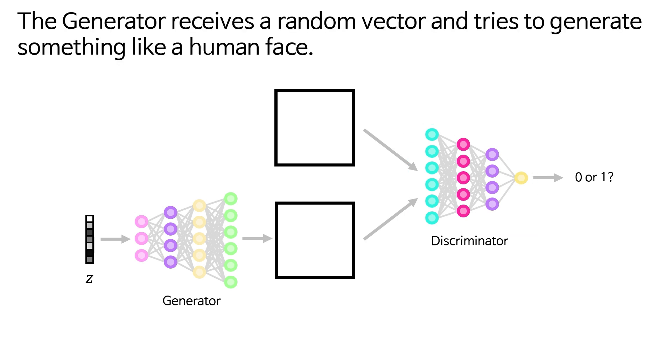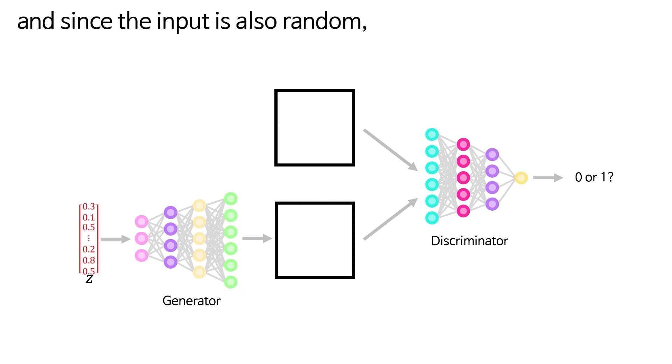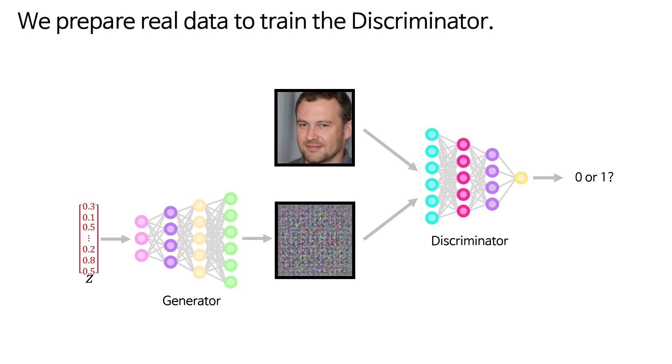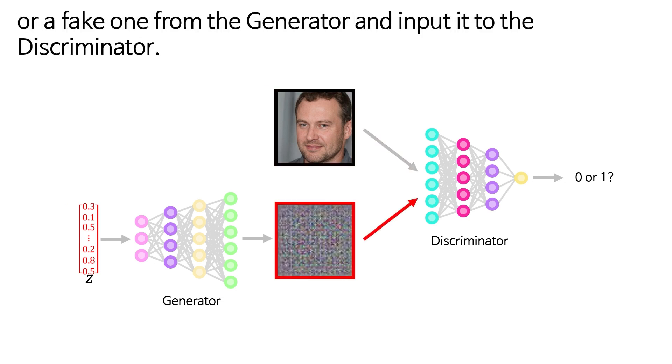The generator receives a random vector and tries to generate something like a human face. At the beginning, the generator's weights are random, and since the input is also random, the output at first will be unrecognizable. Now it's the discriminator's turn. We prepare real data to train the discriminator. Then we randomly choose either a real image or a fake one from the generator and input it to the discriminator.